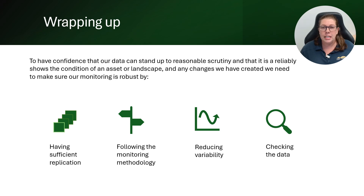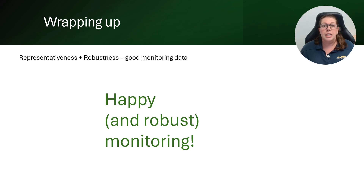To wrap up what we've covered: to achieve robustness of our monitoring data we need to have enough monitoring plots or replication, follow the methodology as written, be aware of and manage any sources of variability, and check our data and correct it if necessary. Doing all of these things means we can have confidence that our data is a good representation of the asset or landscape and any changes that occurred. While it might seem like a lot of work, being able to credibly and reliably demonstrate the outcome of our project is a vital part of good project delivery and ensuring we get more projects in the future. Once you establish processes and procedures to support robust monitoring, it will quickly become second nature. This presentation has focused on robustness — the other half of the equation is representativeness, covered in the guidelines on pages 7 to 18, with a similar presentation available on the NRM Regions Queensland website. Thank you for watching and happy monitoring.